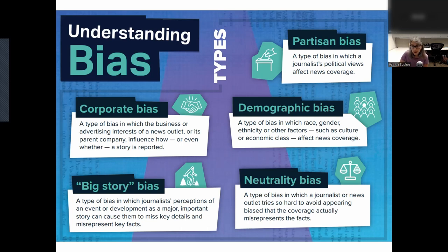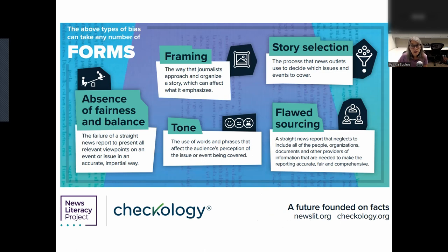Understanding bias: bias can be examined from dimensions other than partisan bias. For example, there are perspectives such as urban versus rural, nationalist versus globalist, and secular versus religious. This slide also lists corporate bias, demographic bias, big story bias, and neutrality bias. Bias can take the form of absence of fairness and balance, framing a story in a certain way, tone in the words and presentation, story selection, and flawed sourcing.